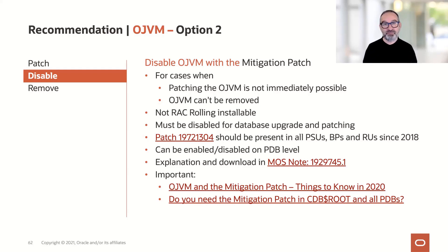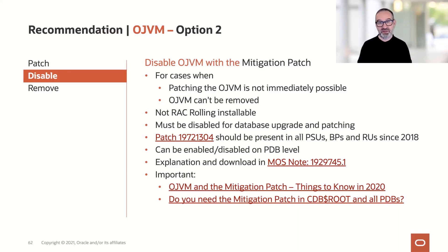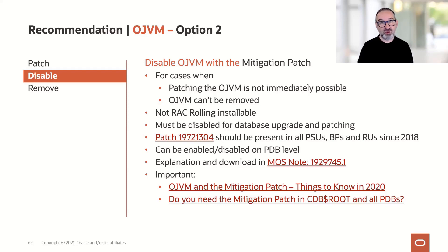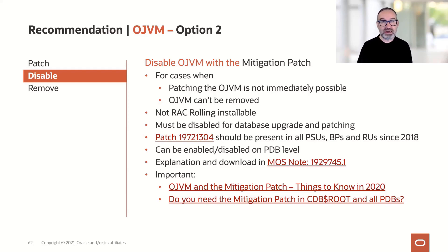When the mitigation patch is on, it disables the Java subsystem. When you want to patch or upgrade your database, the Java subsystem needs to be available — otherwise the upgrade can't proceed. There's a good MOS note explaining this, and on the upgrade blog you'll find many blog posts. Just search for OJVM, things to know, or topics like whether you need the mitigation patch in root and all PDBs. A few weeks ago I explained how to apply the mitigation patch correctly and provision it with new PDBs out of the box.